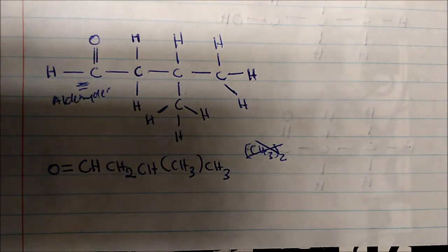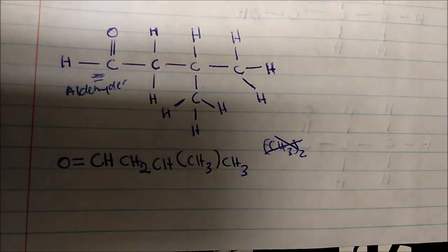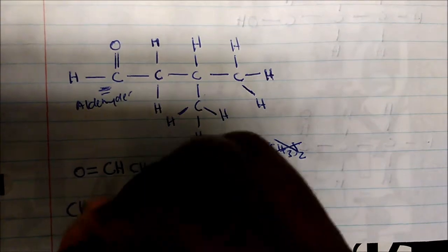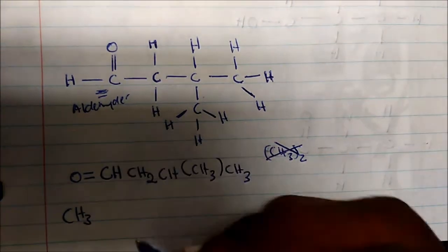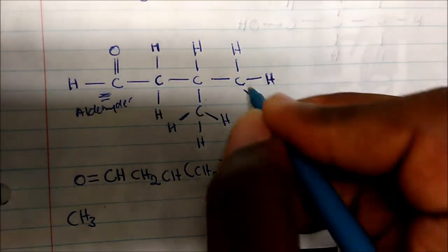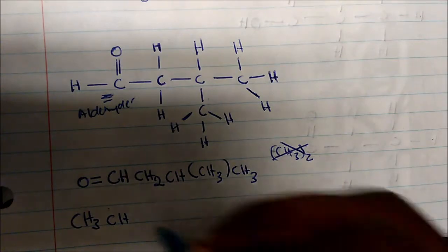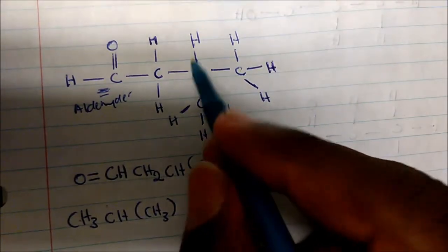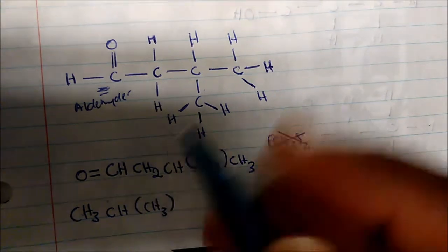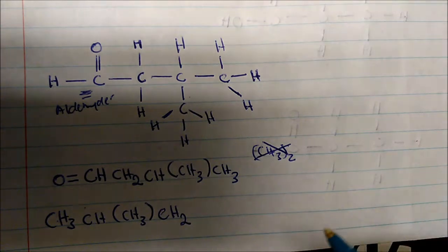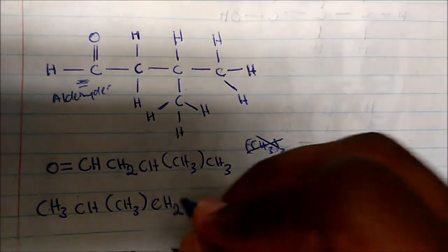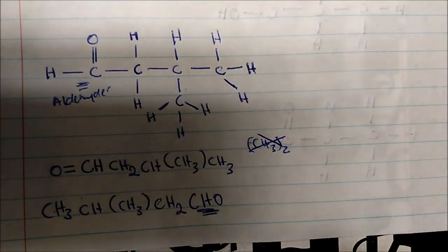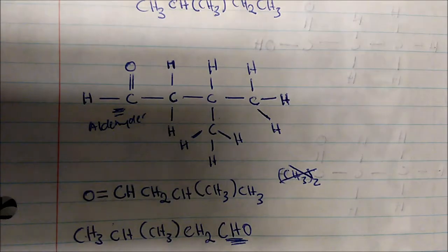Most textbooks actually use a different convention. Rewriting from left to right, I have CH3, then CH with a branched CH3 in parentheses, then CH2, and finally the aldehyde. In books, the aldehyde is usually represented as CHO, so this is the more generic form you'll see: CH3-CH(CH3)-CH2-CHO.